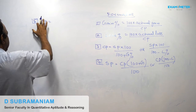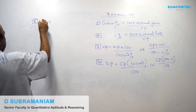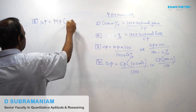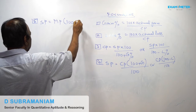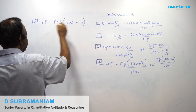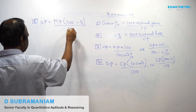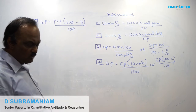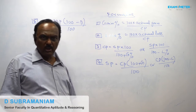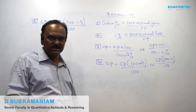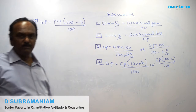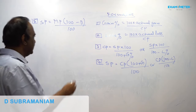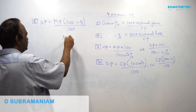Fifth Formula: Selling Price is equal to Marked Price multiplied by (100 minus Discount Percent), divided by 100. That is, SP = MP × (100 − D%) / 100. Here, MP stands for Marked Price.